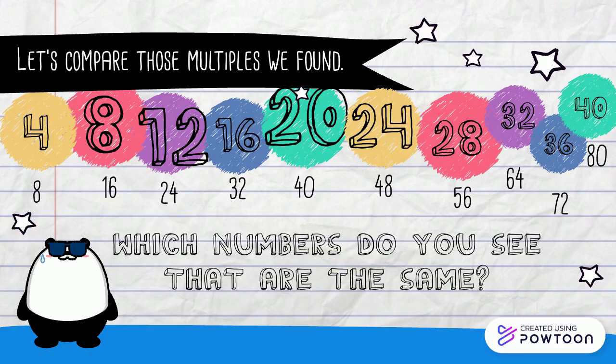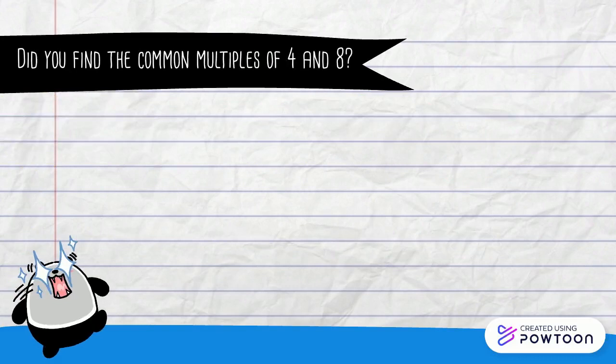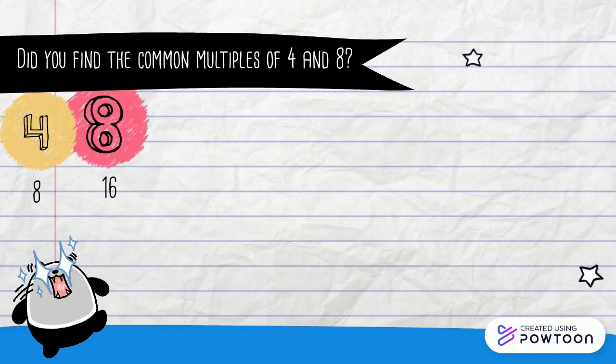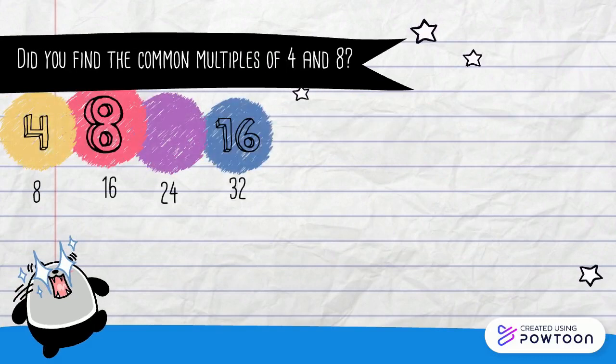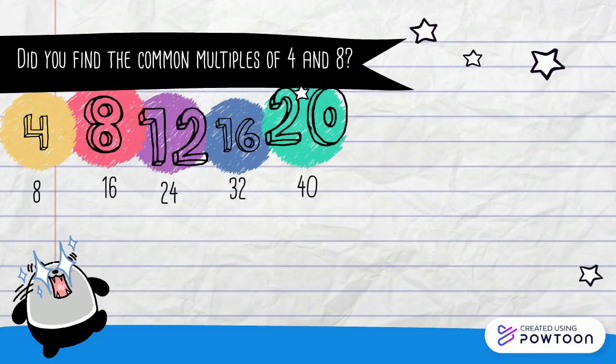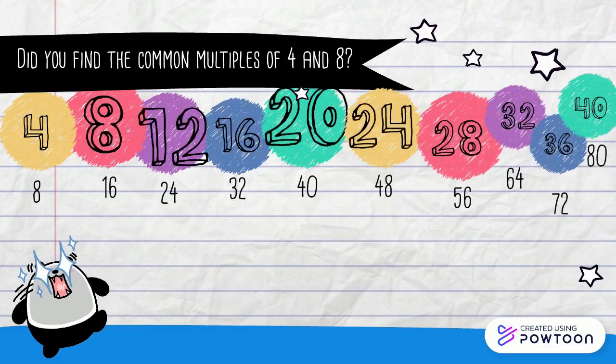Multiples of 8: 8, 16, 24, 32, 40, 48, 56, 64, 72, 80. Which numbers do you see that are the same? Did you find the common multiples of 4 and 8?